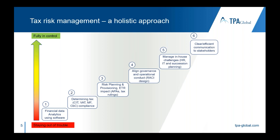Step three is around risk planning and provisioning, ETR impacts — also referring to tax ratings in the context of FIN 48 and ASC 740-10. In essence, this is about managing your tax risk from a P&L and balance sheet perspective. Later I will clarify what value chain analysis could mean for this area.